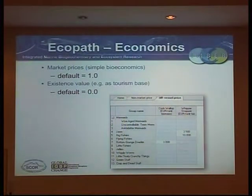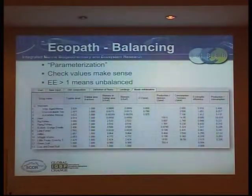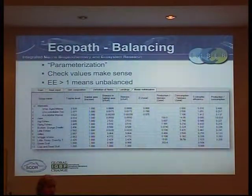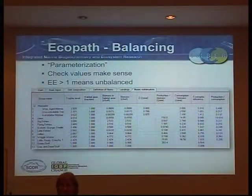In the market prices you can say what they're worth per unit mass — per kilo or per ton — in whatever unit of currency you want. Then once you've entered all your data, you click to a different spreadsheet and it goes and solves the simultaneous equations for you. More often than not you get a message saying it doesn't balance — go back and try again.